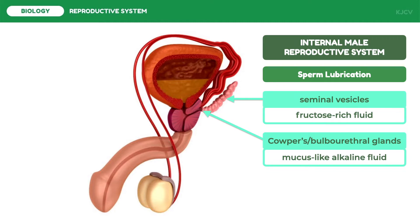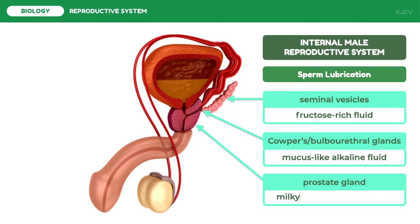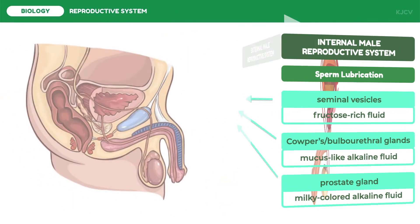The prostate gland is a firm and dense structure located just below the urinary bladder. It produces a milky colored alkaline fluid which greatly contributes to the motility of the sperm. This concludes our discussion of the internal male reproductive system.